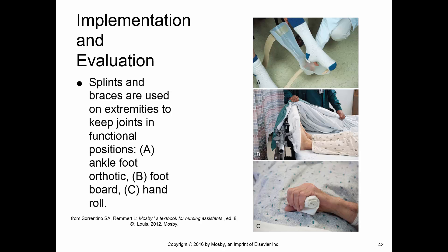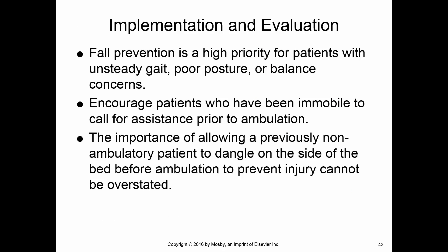A hand roll is just a simple cloth — a washcloth rolled up — to keep the patient's wrist, fingers, and knuckles in proper alignment. However, even with splints and hand rolls, we can still create contractures if we're not doing range of motion activities. That's an important part of using splints.